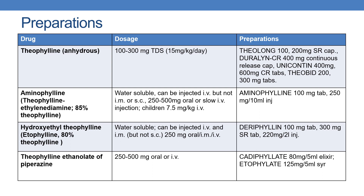The next drug is theophylline anhydrous. The dose is 100 to 300 mg thrice daily, or approximately 15 mg per kg per day. Preparations are Theolong, which contains 100 and 200 mg sustained release capsules; Duralin, which contains 400 mg continuous release capsules; Unicontin, which contains 400 mg and 600 mg continuous release tablets; and Theobid, available as 200 and 300 mg tablets.